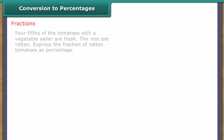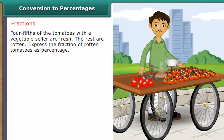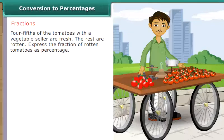Fractions. Four fifths of the tomatoes with a vegetable seller are fresh. The rest are rotten. Express the fraction of rotten tomatoes as percentage.